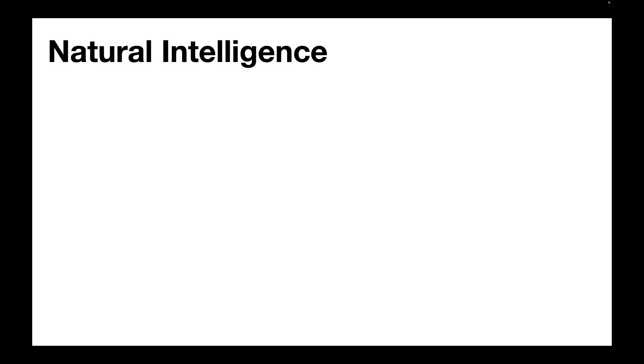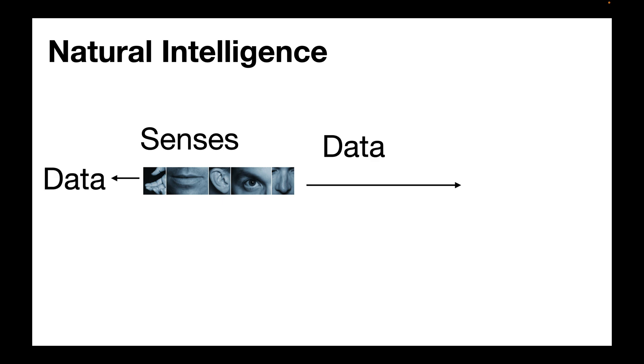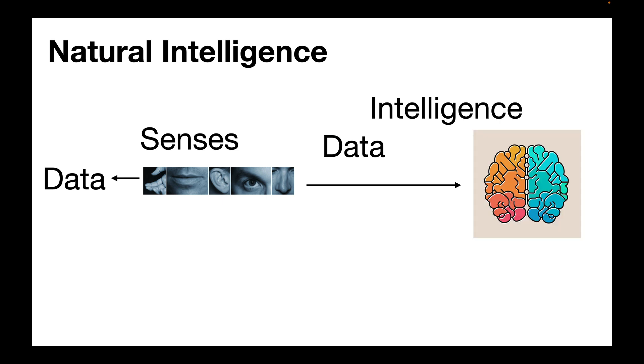We as humans develop natural intelligence by pursuing various things through our senses. The data that comes in through our senses will be processed by the brain and over time we develop intelligence.